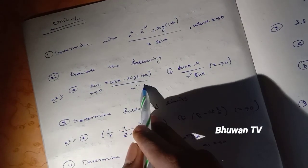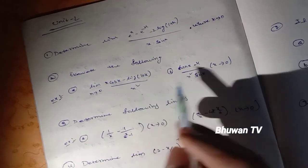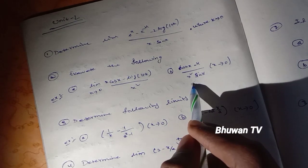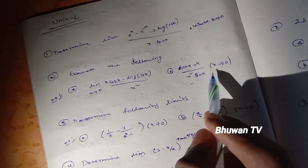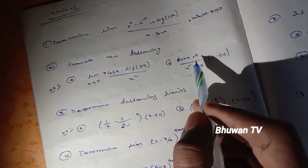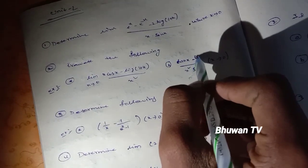Evaluate: (1) as x tends to 0, x cos x minus log(1 plus x) divided by x², and (2) (tan x minus sin x) / x³ as x tends to 0.